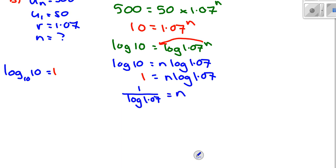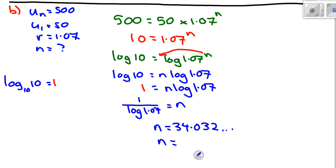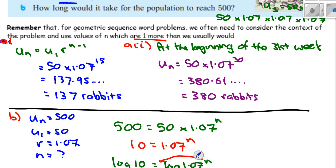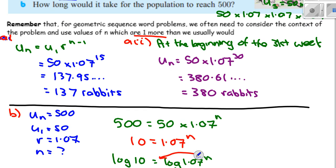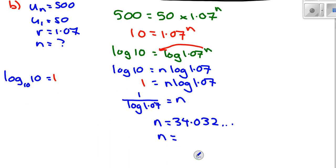And then at that point it would probably be the calculator. Do you get a particular number, do you get a whole number or a decimal? 34.032. Yeah. Then we need to round. In this case, remember n has to be an integer. Do we need to round it up or round it down? Up, up, correct. Because the question was after how many weeks will it have reached 500? At 34 weeks it won't have reached 500, it'll be just under. So you're right, in this case in the context we need to round it up. 35 weeks.